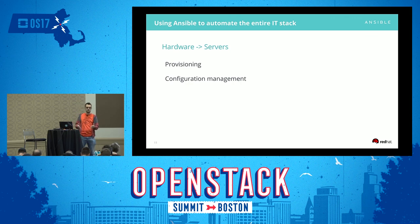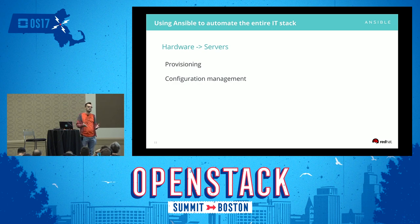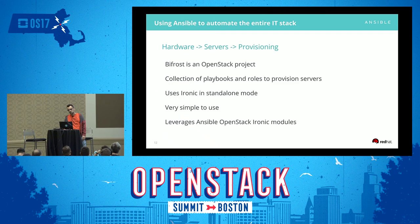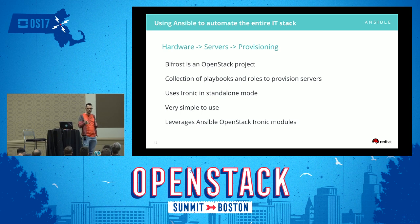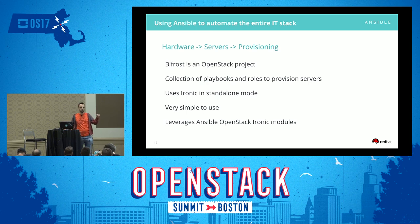Now we move on to servers — the final part of the hardware layer. As an operator, we need to provision servers, which is the process of putting an OS onto a server, and then do config management to manage the OS of that server. For provisioning, we have integrations with popular provisioning systems like Cobbler or Foreman. I'm going to talk about Bifrost because it's an OpenStack project and it's also Ansible-native. Julia gave a talk this morning about Bifrost and she knows a lot more than I do — we used it in infra with great success. Bifrost is a collection of playbooks and roles to provision servers. It uses Ironic in standalone mode.